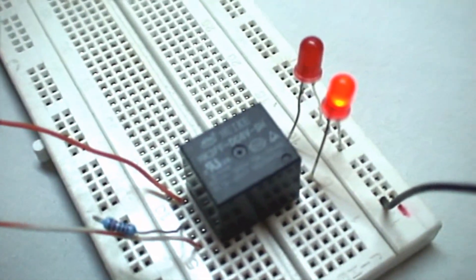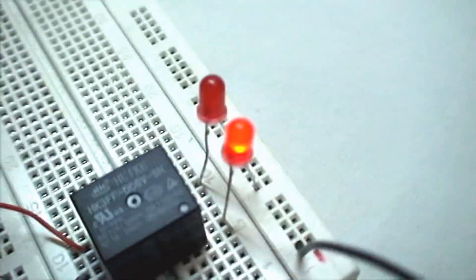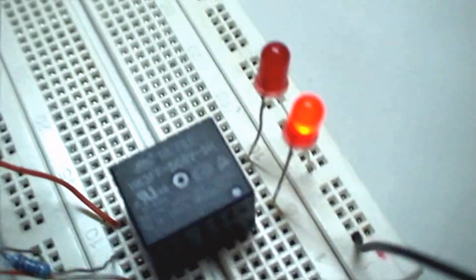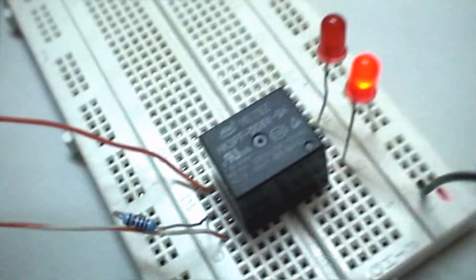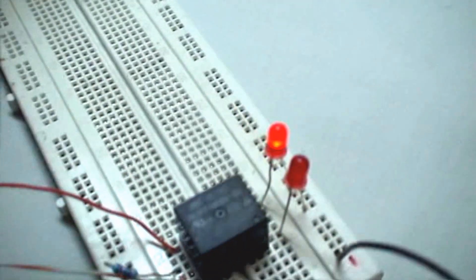So when we switch it on, the electromagnet gets activated and the second circuit turns on. We can assume the first LED to be circuit one and the second LED to be circuit two. So when we switch it on, circuit two is on. When we switch it off, circuit one is on.